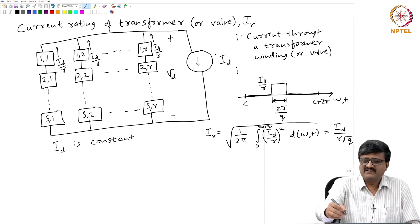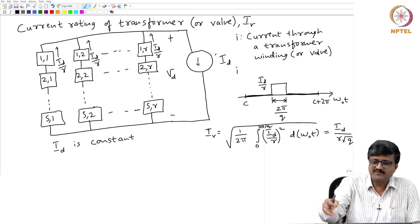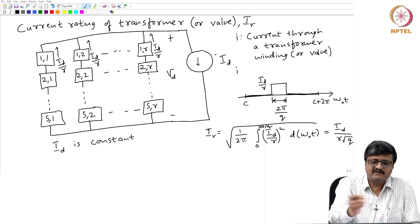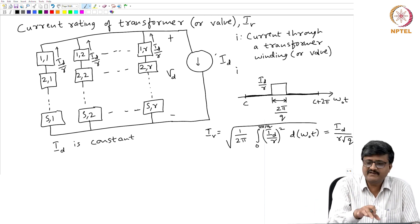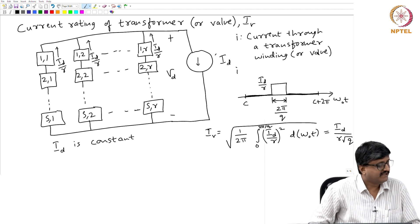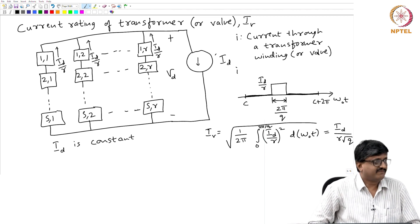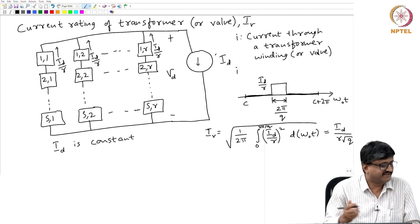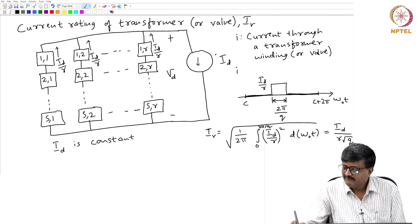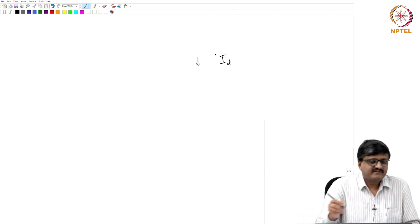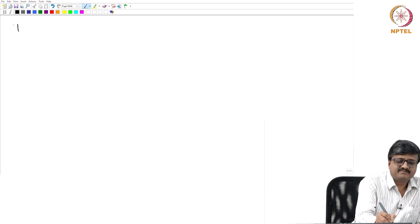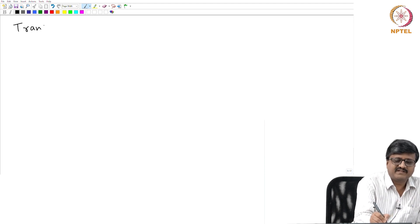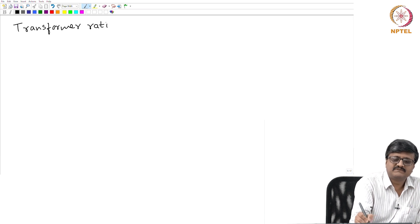The valve current rating and transformer current rating are the same, but what we are interested in is the volt-ampere rating of the transformer — simply called the transformer rating, denoted S (the standard symbol for apparent power).